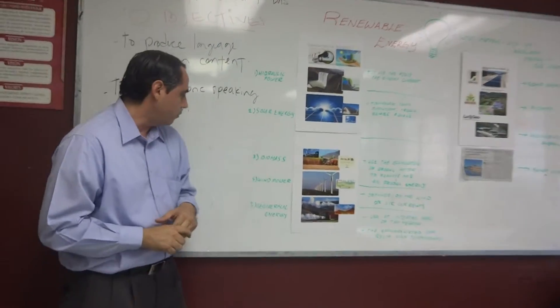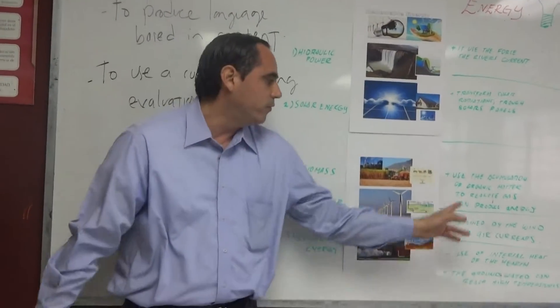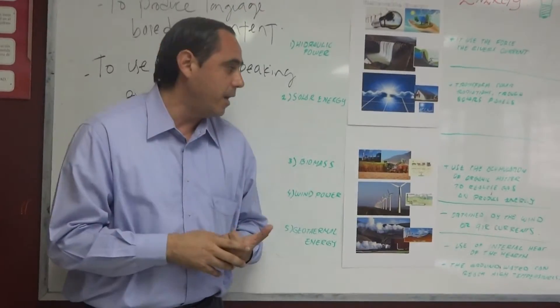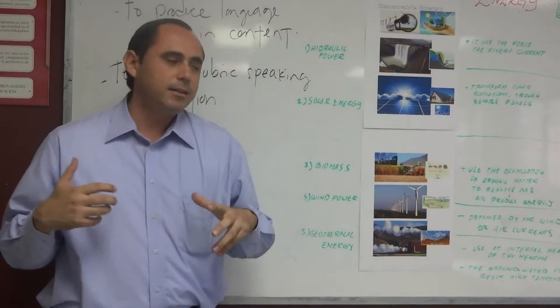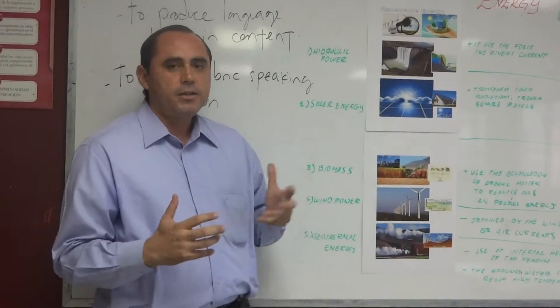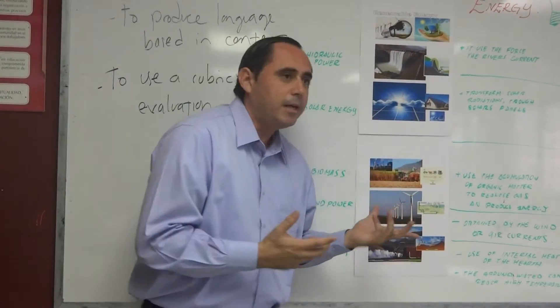And the third option is biomass. In this case, it is used for the accumulation of organic matter, maybe vegetal or animal, to release gas. The idea is to produce energy through electrical turbines.